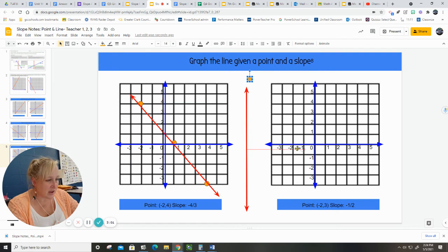I'm doing the same thing here. So we have the point of negative 2, 3. We're going to do a slope of negative 1, 2. So negative 1 means down 1 over 2. Put a point. Put the next point. I start at that point. Down 1 over 2.